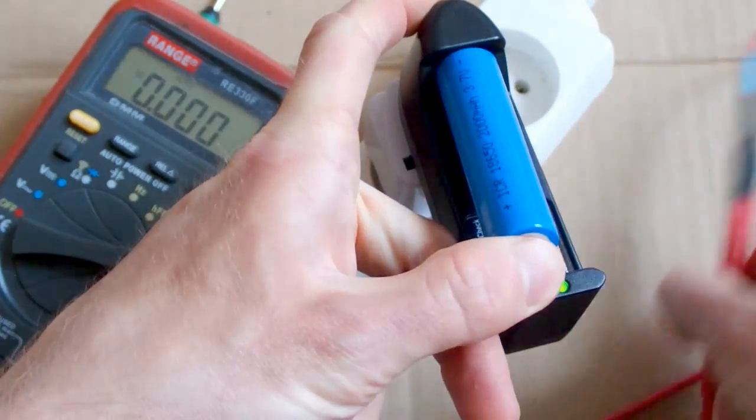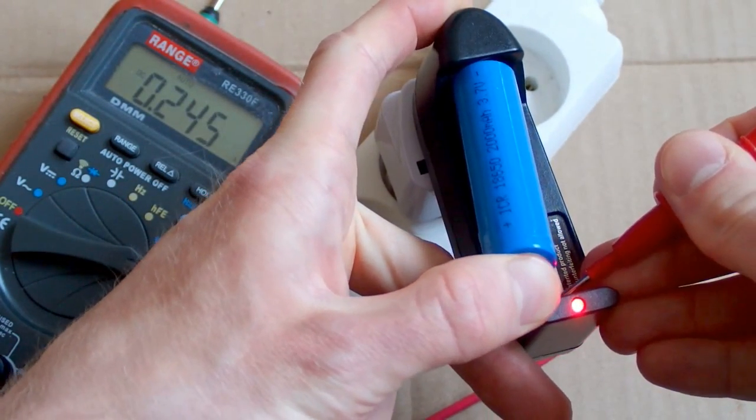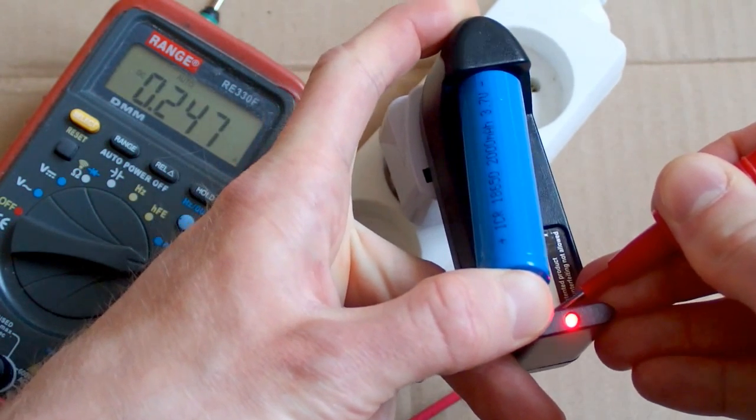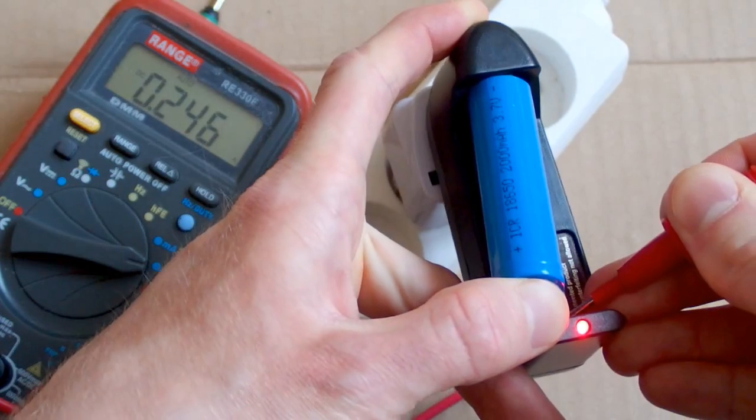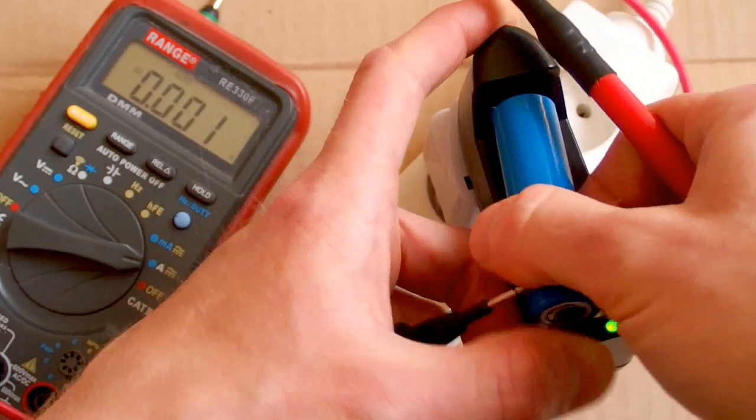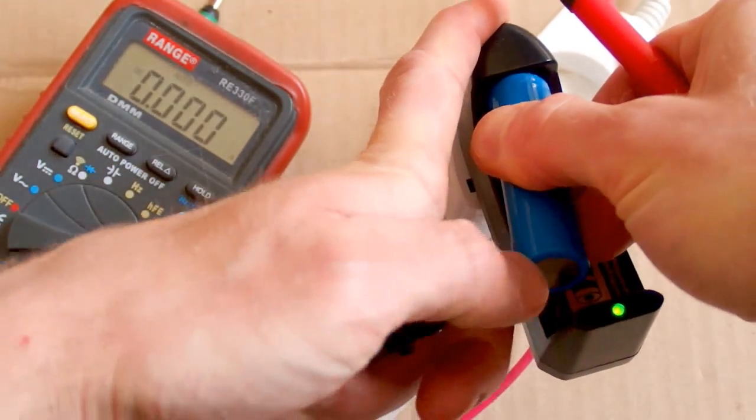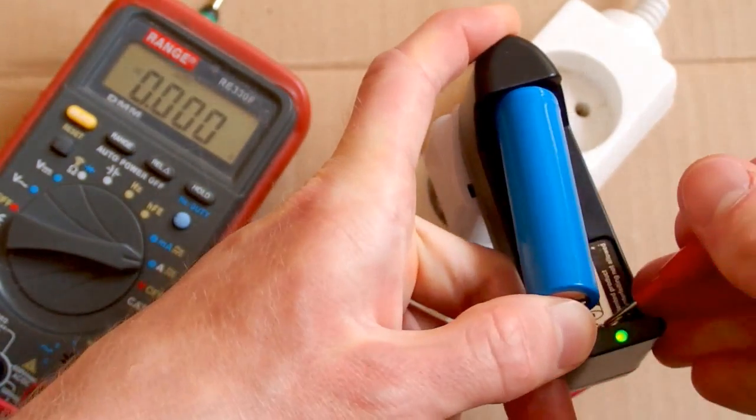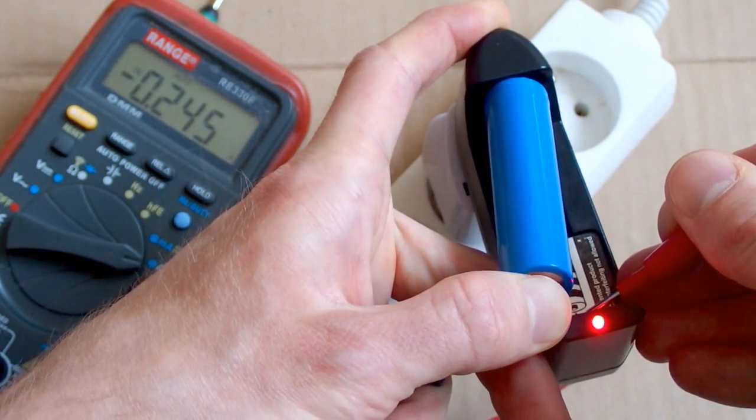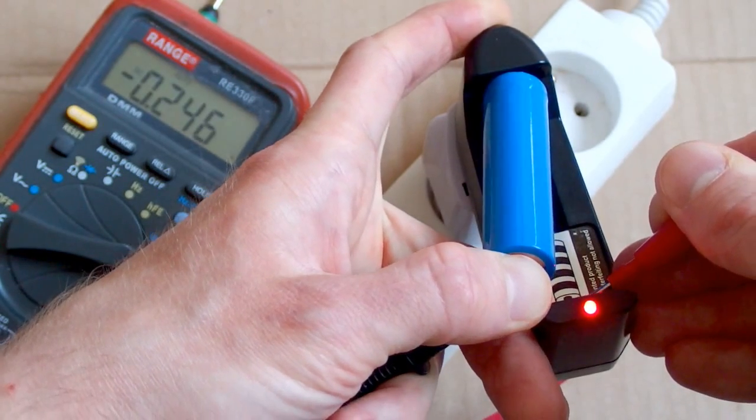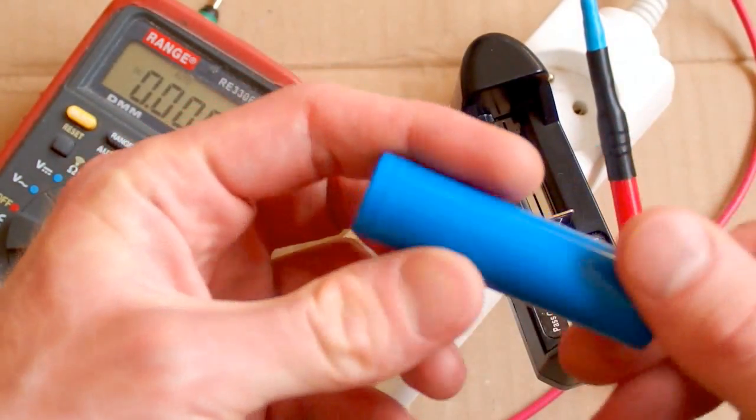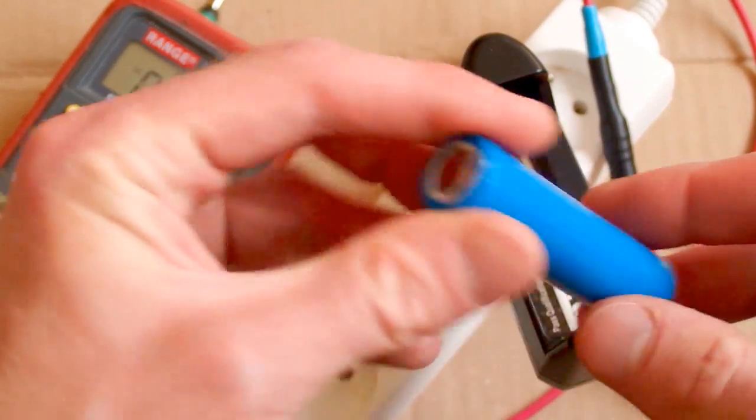Let's try to measure the current. The current is flowing the right way, so it probably detects the polarity. It's charging at about 250 milliamps. Now let's try to swap the polarity. And now the current is still flowing the right way, from the positive to the negative, so it really detects the polarity of the battery and chooses the right direction of the current.